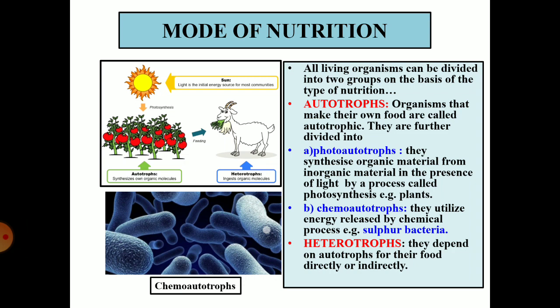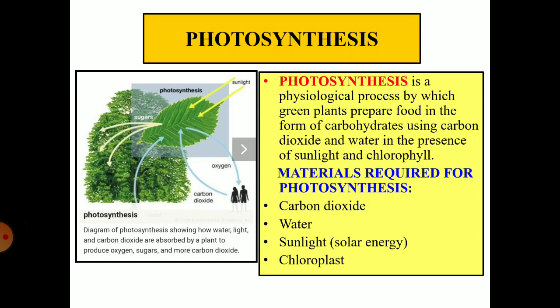Heterotrophs depend on autotrophs for their food, directly or indirectly. Now, let us study photosynthesis. Photo means light and synthesize means to make. Photosynthesis is a physiological process by which green plants prepare food in the form of carbohydrates using carbon dioxide and water, in the presence of sunlight and chlorophyll.